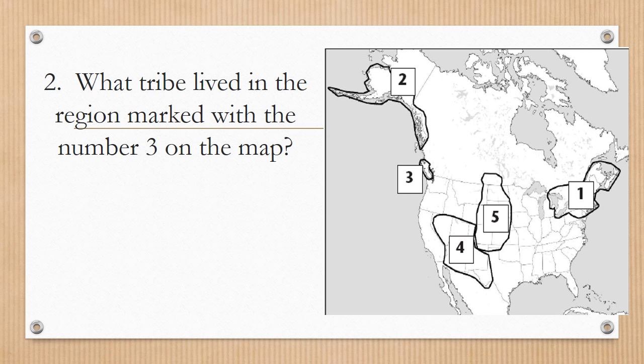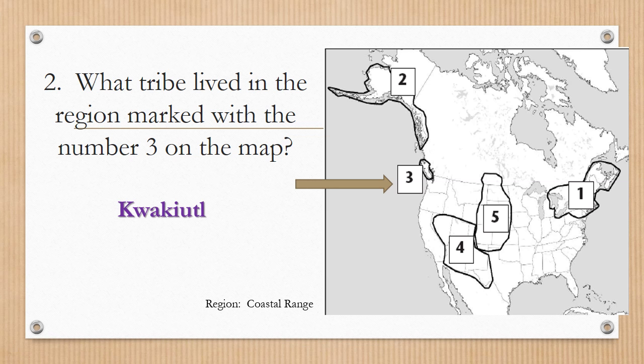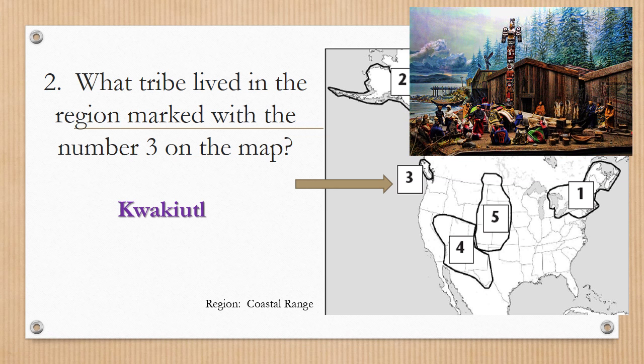Number two: what tribe lived in the region marked with the number three on the map? The Kwakiutl — and they probably reached further down into Washington, Oregon, and parts of California, as well as that part of Canada. The region to remember for the Kwakiutl is the coastal range. They lived in wooden shelters because the climate is rainy, and they are the ones to remember who had the totem poles.